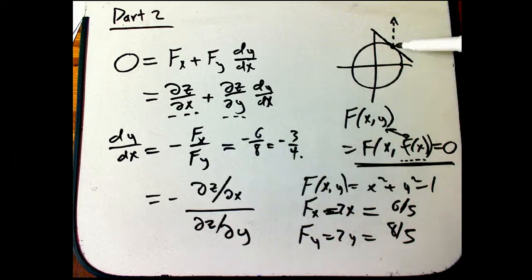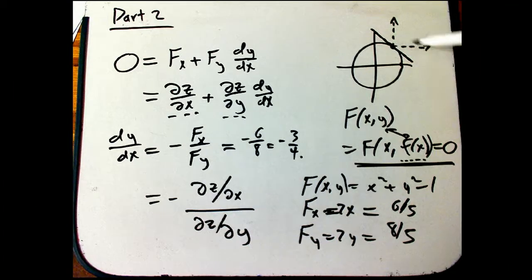So we're saying that if we went in this direction we'd have a certain rate of change, if we went in this direction we'd have a certain rate of change. In particular, they'd both be positive.